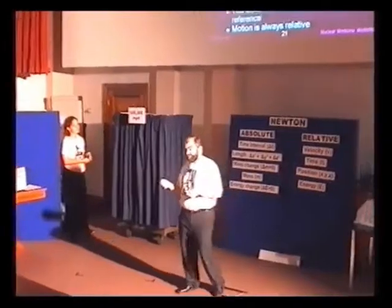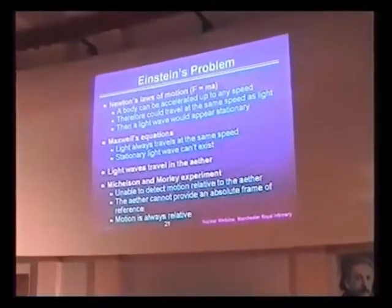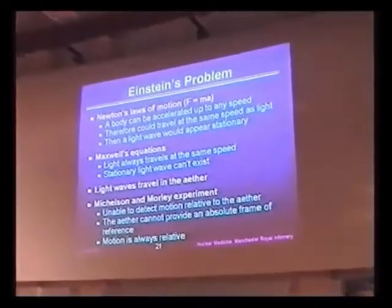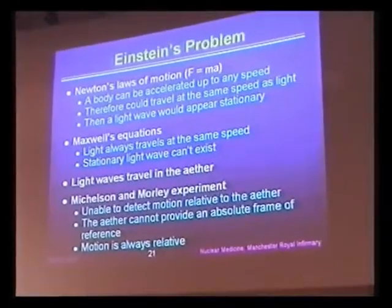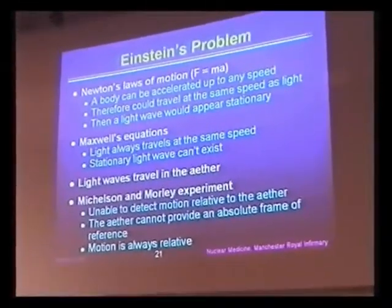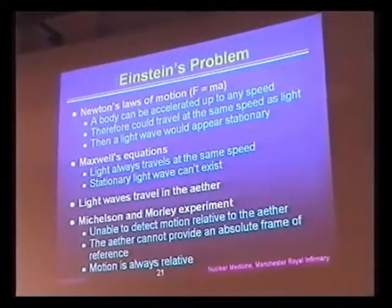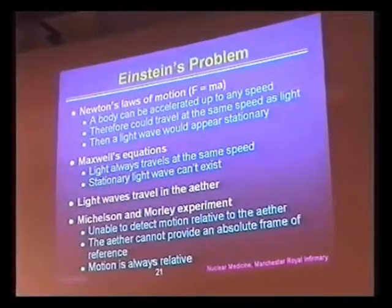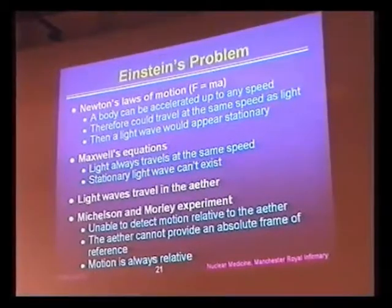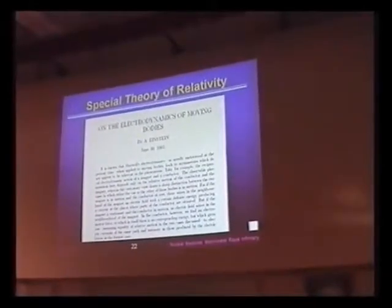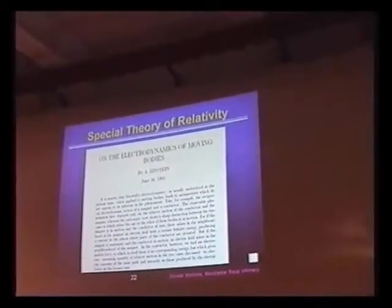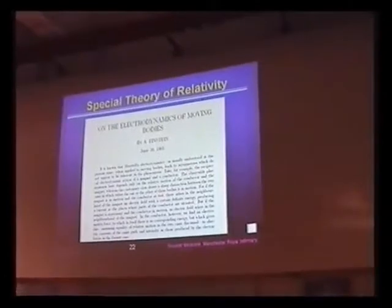The other problem is that light waves are supposed to travel in the ether, but the Michelson-Morley experiment was unable to detect the movement of the Earth through the ether. So the ether can't provide this universal frame of reference that everyone was looking for, and therefore motion is always relative. This led to the solution that Einstein was looking for in his paper on the special theory of relativity.